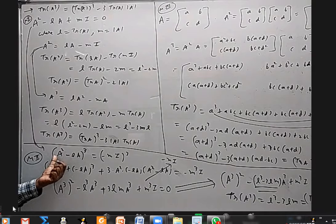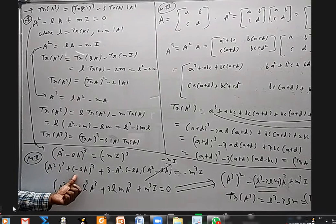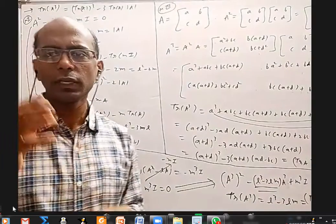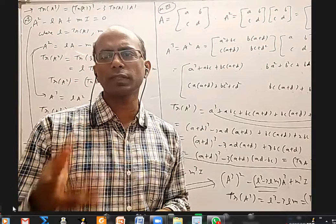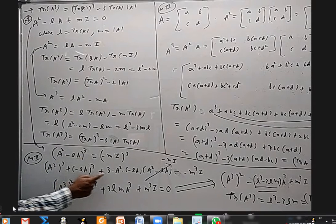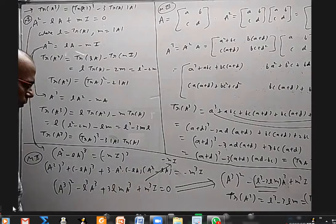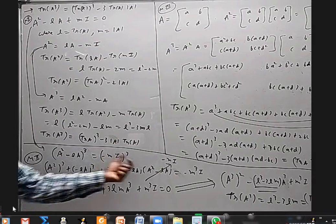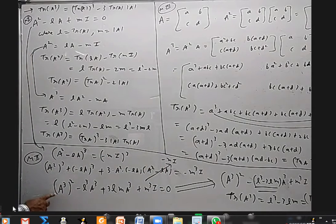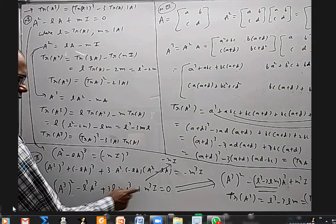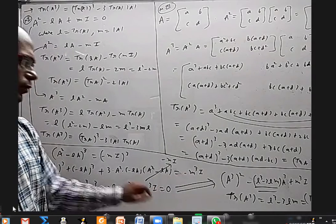I take A² − LA as A and −MI as B. The formula (A + B)³ = A³ + B³ + 3AB(A + B). We also have A³ + B³ + 3A²B + 3AB² + B³. In place of A² − LA, I substitute −MI. So this gives A⁶ on one side, L³A³ on another. For the 3AB(A+B) term, I get 3LM·A³, and bring the M³I term to the other side.